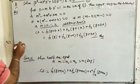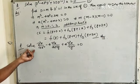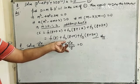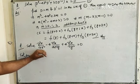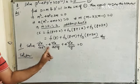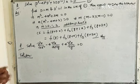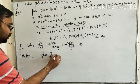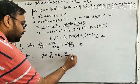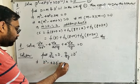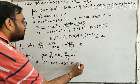Next question: Solve ∂²z/∂x² - 4(∂²z/∂x∂y) + 4(∂²z/∂y²) = 0. This is a homogeneous linear PDE with constant coefficients 1, -4, and 4, of order 2. Putting ∂/∂x = D and ∂/∂y = D', we get (D² - 4DD' + 4D'²)z = 0.